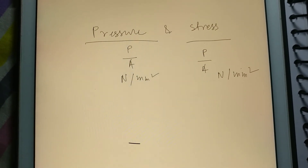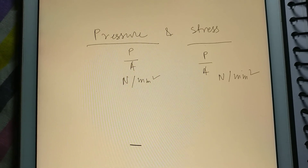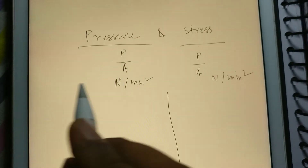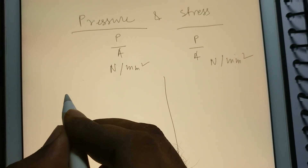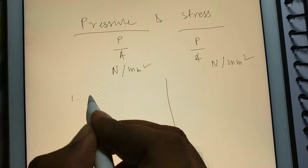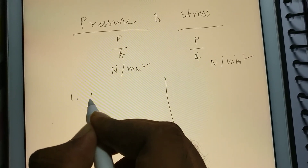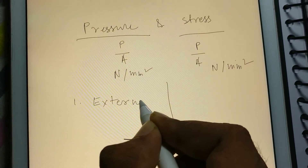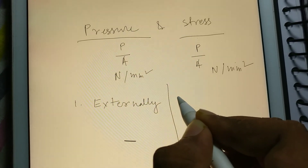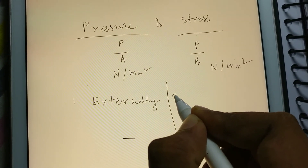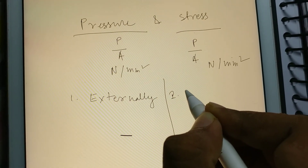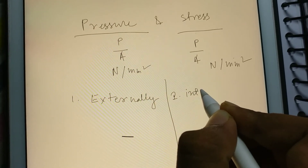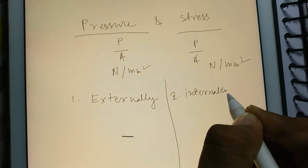So what is the difference between pressure and stress? The first difference is that pressure acts on a body externally, whereas stress is an internal property of a material — it is generated internally.